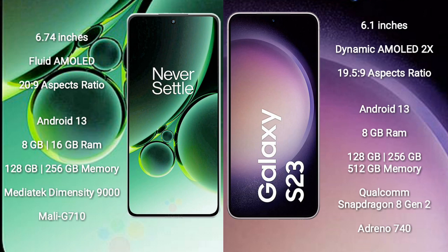Both OnePlus Nord 3 and Samsung Galaxy S23 run on the Android 13 operating system. OnePlus Nord 3 comes with 8GB or 16GB RAM and 128GB or 256GB internal storage.